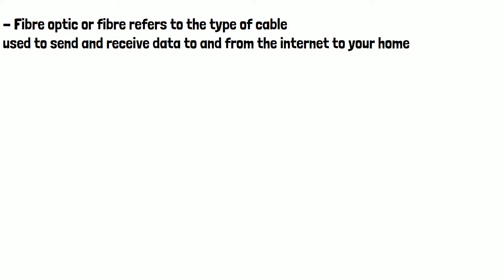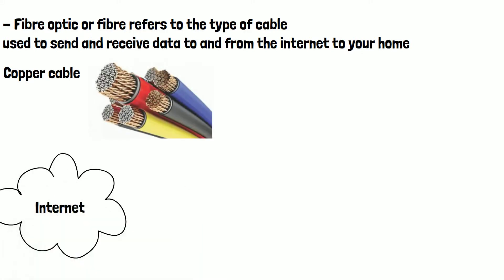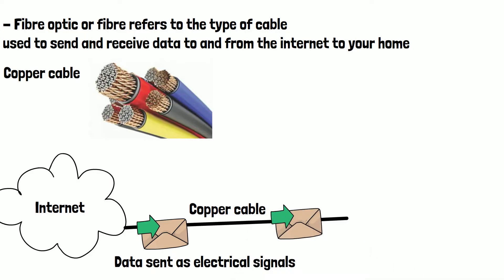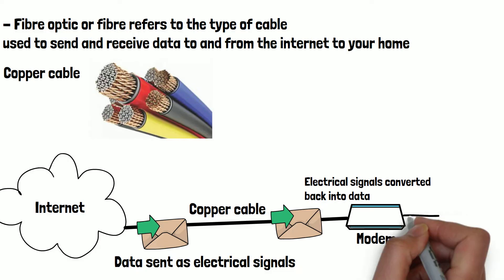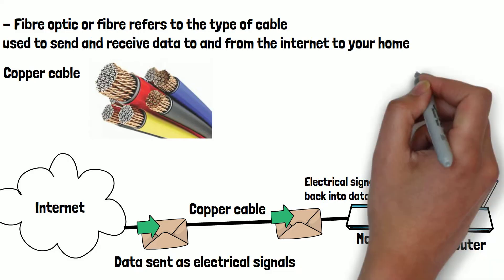The most common method, and the only method up until recently, was to use a copper cable. Most homes still use this. Data from the internet is split into packets of ones and zeros before being sent down the copper cable in the form of electrical signals. These electrical signals are then received by your modem and converted back into data, which is then sent onto your router and finally sent onto the device that requested it.